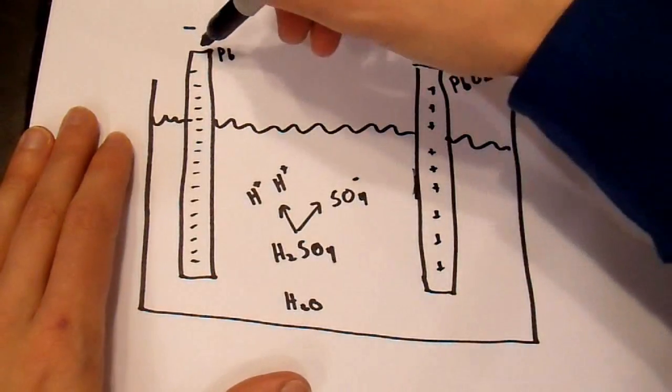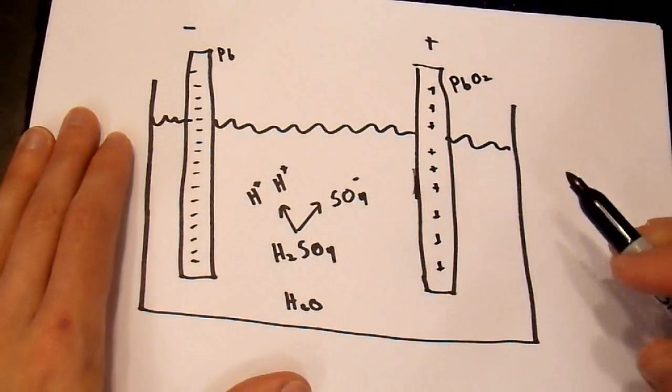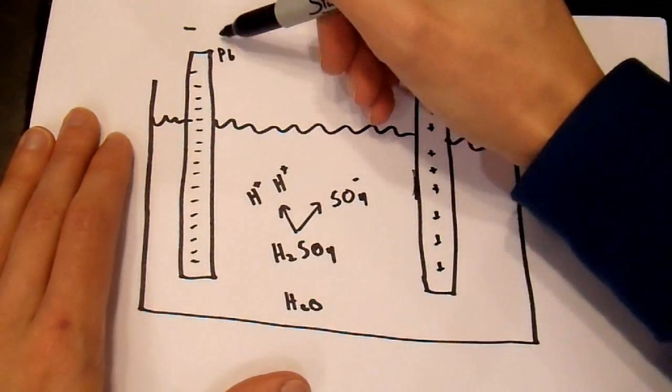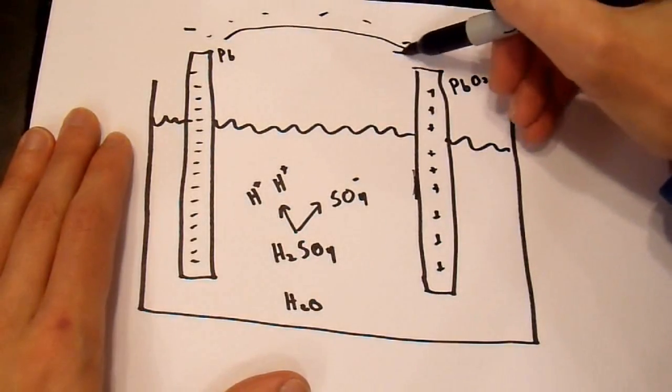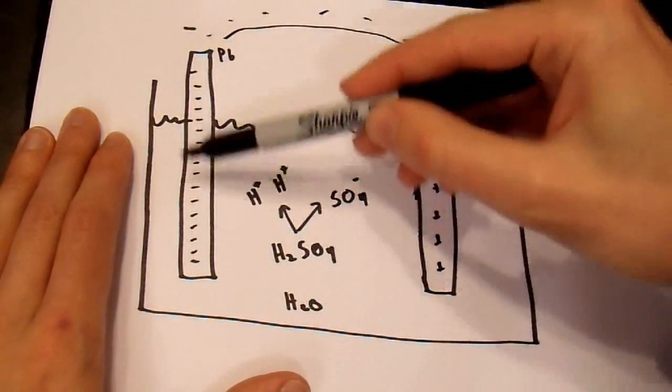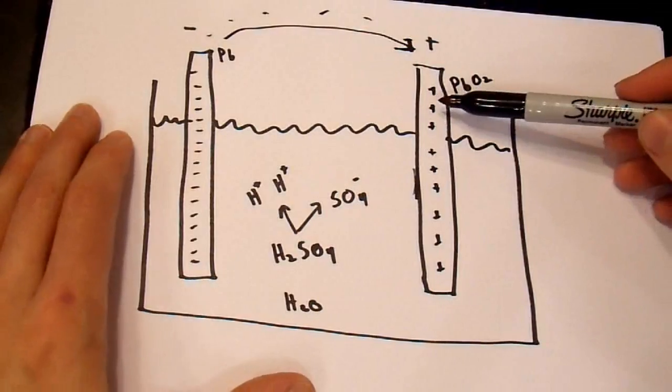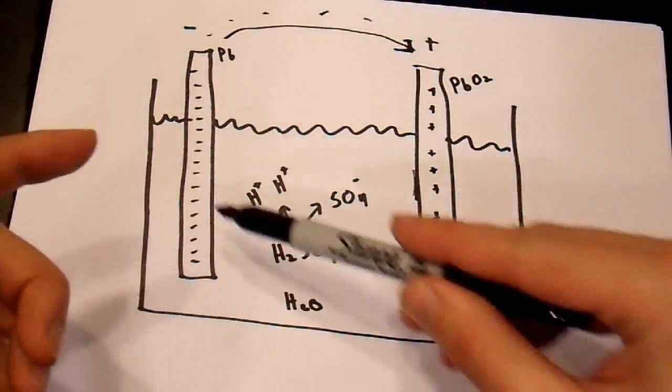Now, when you complete the circuit, negative to positive, to start your car or what not. Some of these electrons migrate their way across into the positive terminal. So, these are taken away. They go into the positive terminal. And, now the reaction can continue once again.